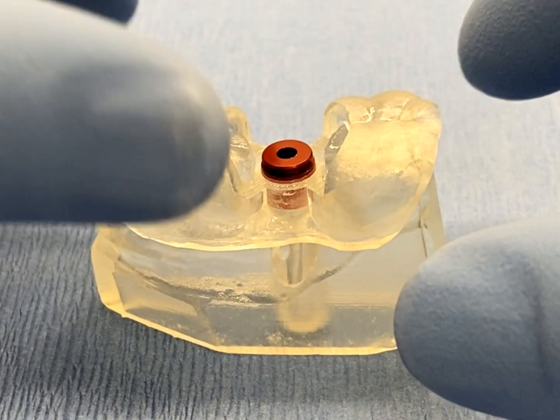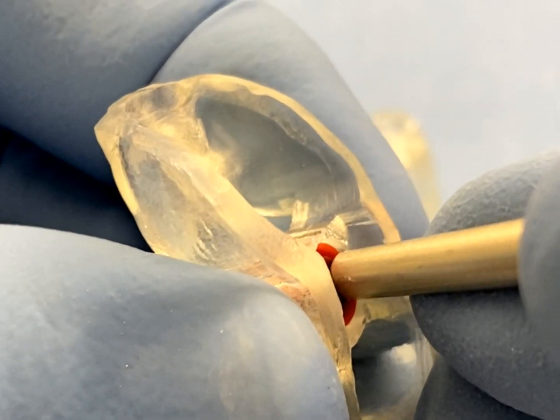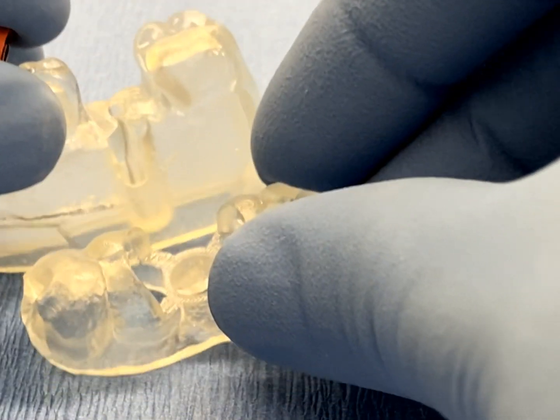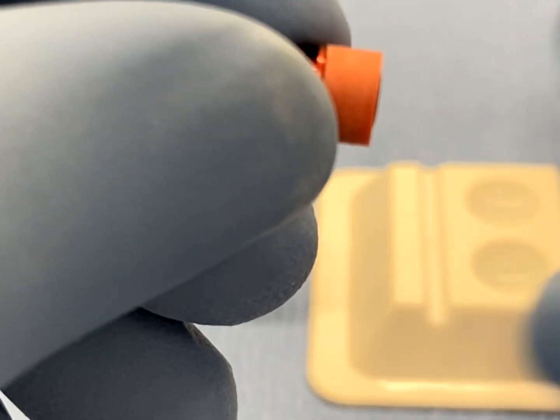After the fit has been confirmed, remove the assembled GRS surgical ring and surgical guide analog from the surgical guide by using a blunt instrument. Care should be taken not to distort the internal retention features of the surgical ring.